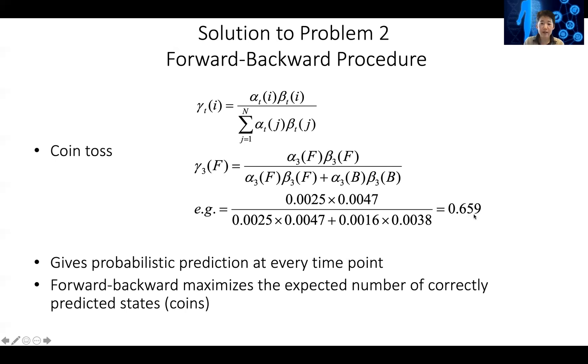At this point, whichever probability is larger than 50%, that's the probability you assign to that particular coin. In this case, because the fair coin probability is 0.659, the third position is a fair coin. But not only are you given a prediction, you are given a confidence of the prediction. At some positions, you might be 99% sure this is a fair coin, but at other locations you're only 51% sure. So you have a confidence at every location as well.